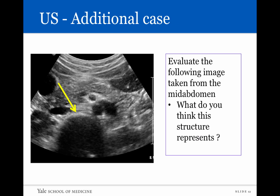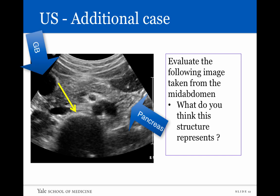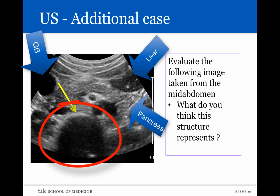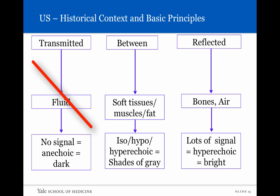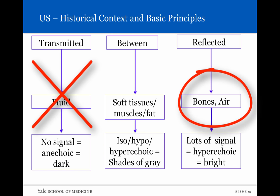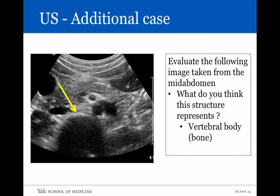Looking at another case from the patient's mid-abdomen showing the pancreas, gallbladder, and a portion of the liver: one structure shows a very sharp interface with everything behind it appearing rather dark — not completely black like a simple cyst, but dark as if almost no sound waves are getting through. This rules out fluid. Looking at the bright reflected signal and the shadow behind it, this indicates bones or air. Inside the abdomen, this turns out to be the vertebral body — demonstrating what bones look like on ultrasound.